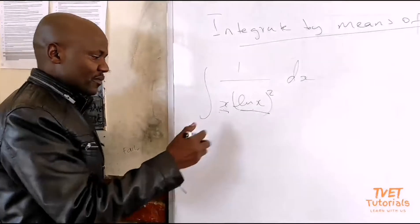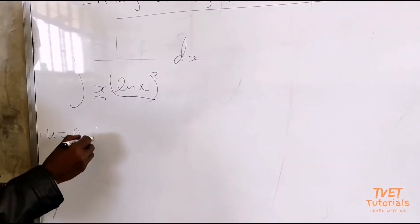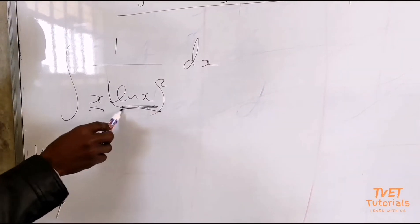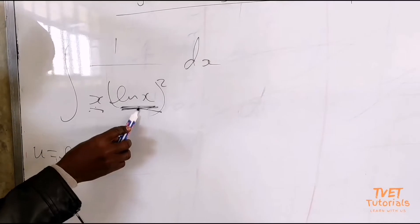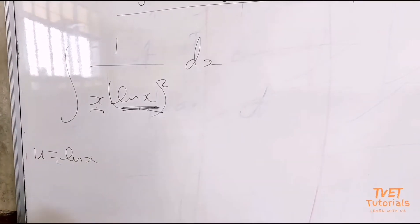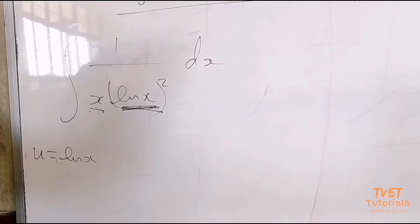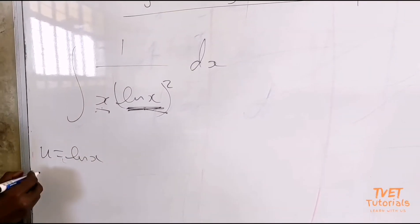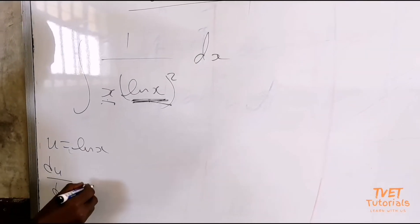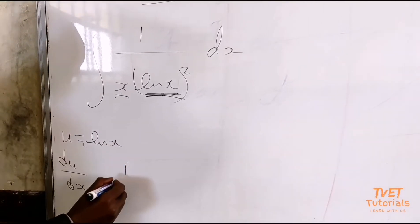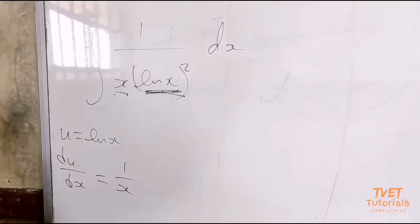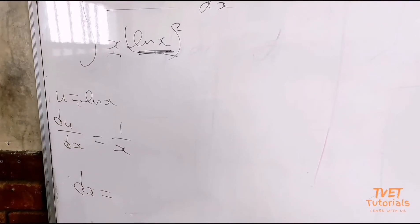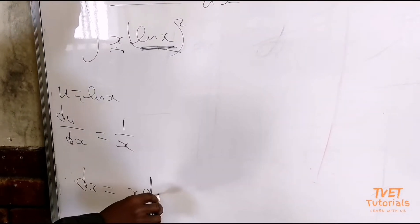Let's check: if you say u = ln x. If you let u = ln x, then if you differentiate ln x, it's going to give 1/x. So at some point, x is going to cancel. You let this equal to u, then differentiate. Always, the differentiation of ln x is 1/x. After differentiation, always make dx the subject of the formula.